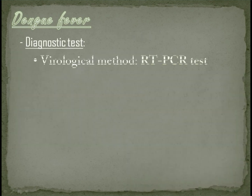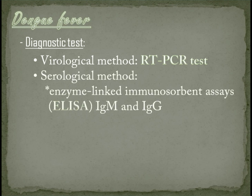Diagnostic tests. Virological method, like RT-PCR test — this is the confirmatory test. Serological method, such as ELISA, which may confirm the presence of a recent or past infection. It detects the IgM and IgG anti-dengue antibodies. The presence of IgM indicates recent dengue virus infection, while IgG indicates past infection.